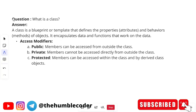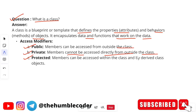What is a class? A class is a blueprint or template that defines the properties and behaviors — behaviors are essentially methods — of objects. It encapsulates data and functions that work on that data. Access modifiers we have are public, private, and protected. Public means members can be accessed from outside the class. Private means members cannot be accessed directly from outside the class. Protected means members can be accessed within the class and by derived classes.